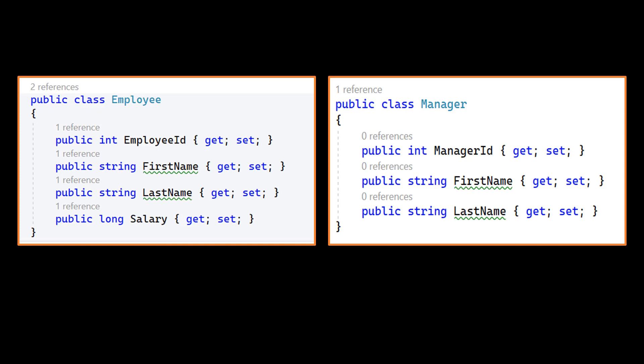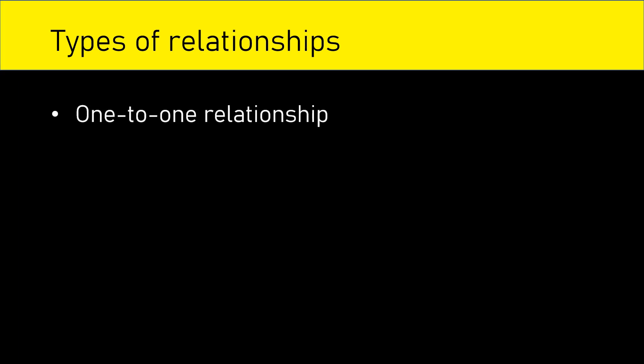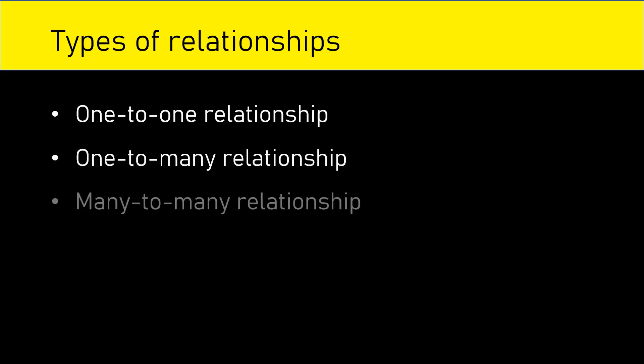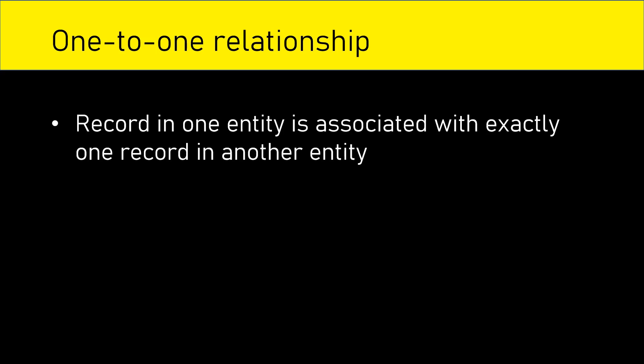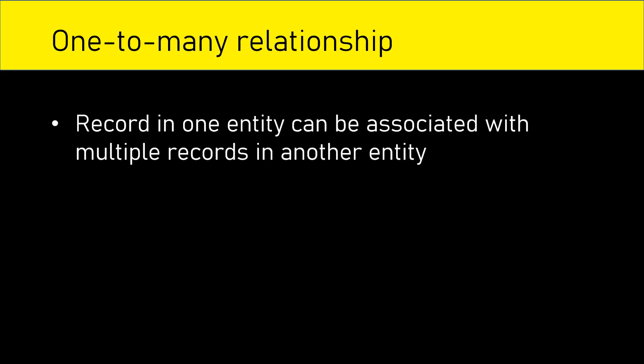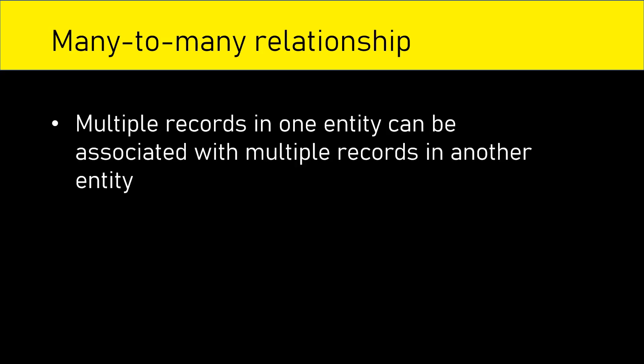To understand how to set up a relationship, first we should know what are the different kinds of relationships that we can set up in Entity Framework Core. Relationships can be classified as one-to-one, one-to-many, or many-to-many. In a one-to-one relationship, a record in one entity is associated with exactly one record in another entity. In a one-to-many relationship, a record in one entity can be associated with multiple records in another entity. In a many-to-many relationship, multiple records in one entity can be associated with multiple records in another entity.